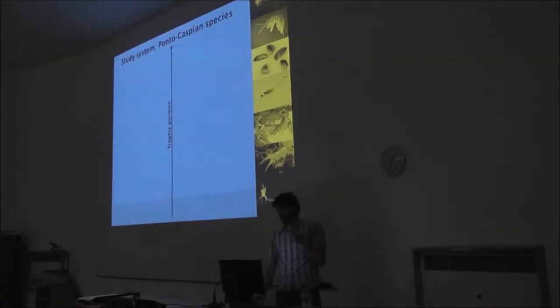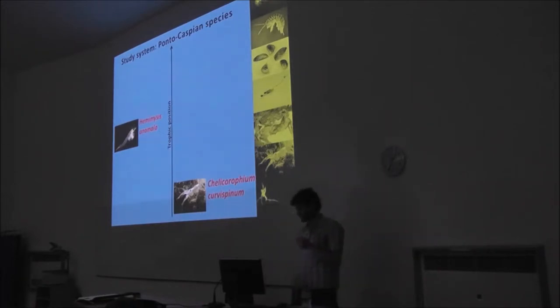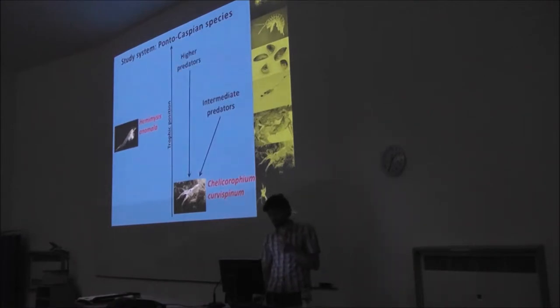I've been looking at Ponto-Caspian species, two in particular, that have become very successful invaders of the Shannon. Firstly, Kelicorahium curvospinium, a tubiculous amphipod, a basal consumer, a filter feeder, and its interactions with intermediate and higher predators. And secondly, Hemimysis anomala, the mysid shrimp, and its interactions with basal consumers, and also how those are mediated by higher predators.